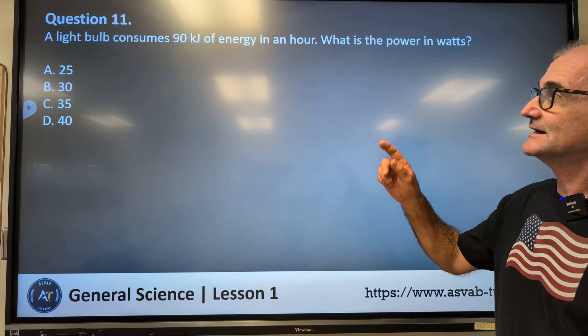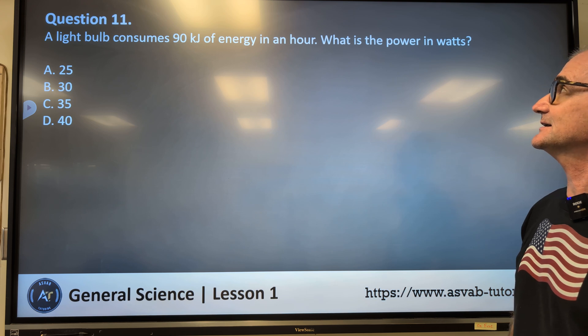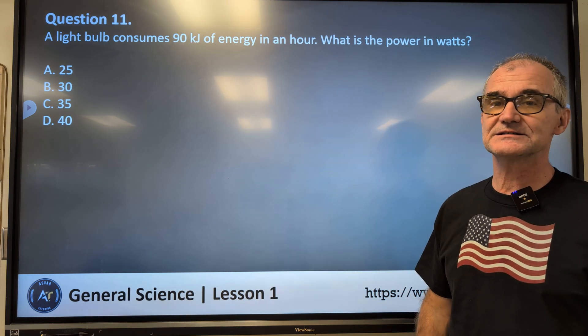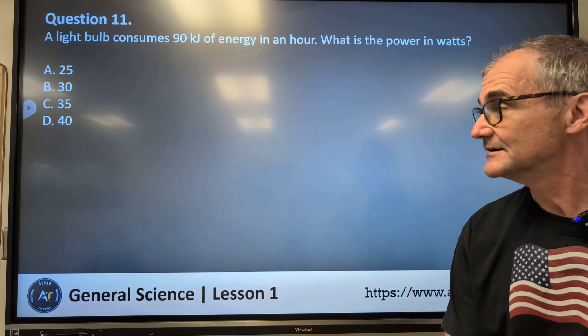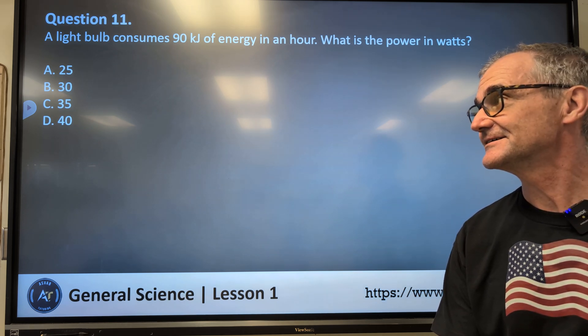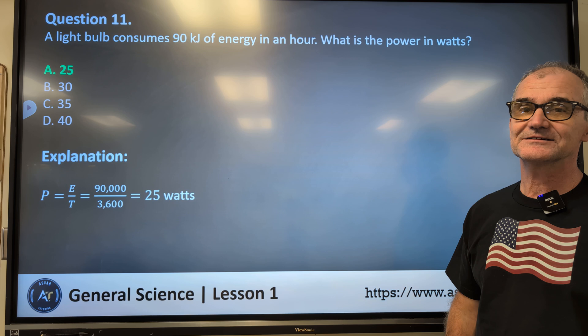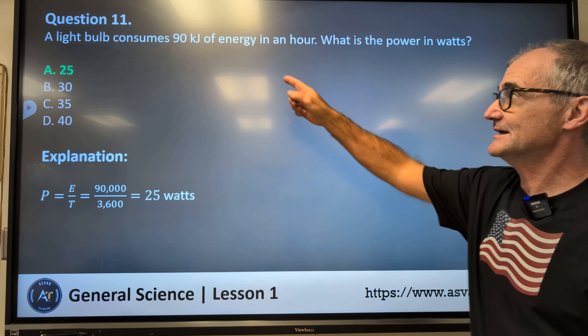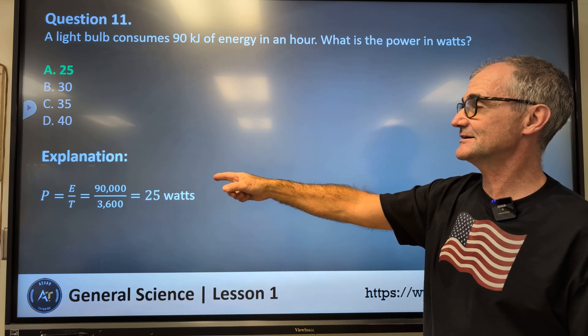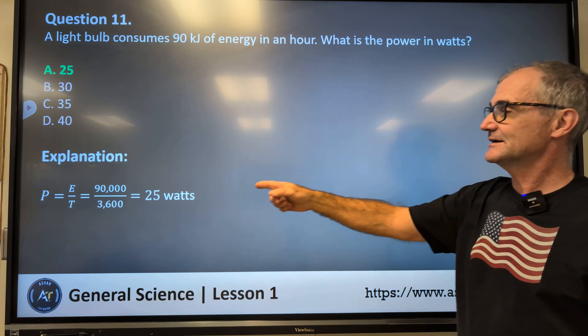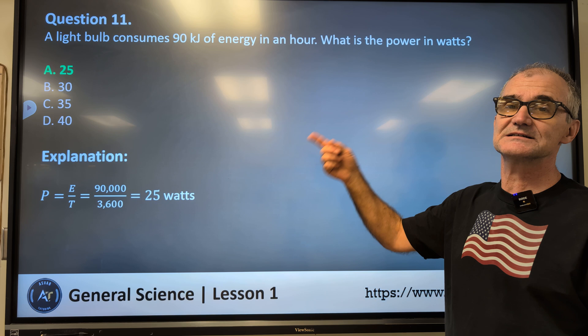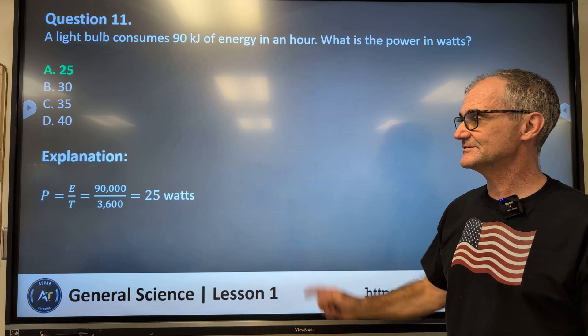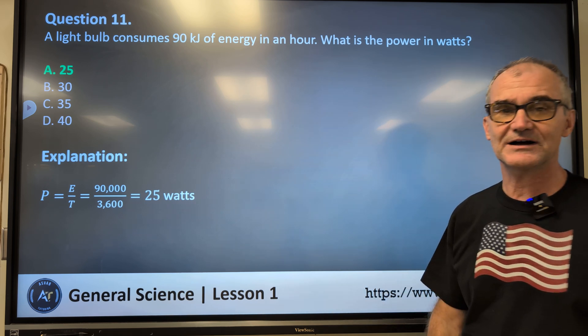Number 11. A light bulb consumes 90 kilojoules of energy in an hour. What is the power in watts? A, 25. B, 30. C, 35. D, 40. Do the computation and figure it out. Correct answer is A, 25. Power is equal to the energy measured in kilojoules. K is kilo, meaning thousand. So that's where the 90,000 comes from. And an hour, that's 3,600 seconds, right? 60 minutes in an hour, 60 seconds in a minute. 60 times 60 gives you a 3,600. 90,000 divided by 3,600 gives you the 25 watts of power.